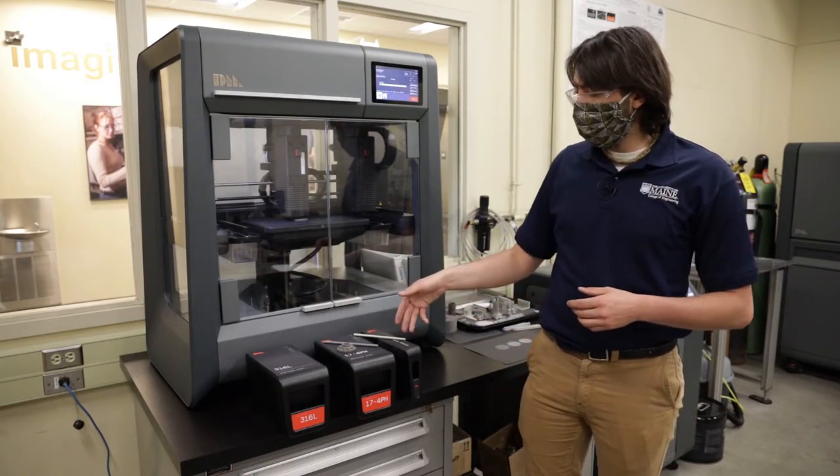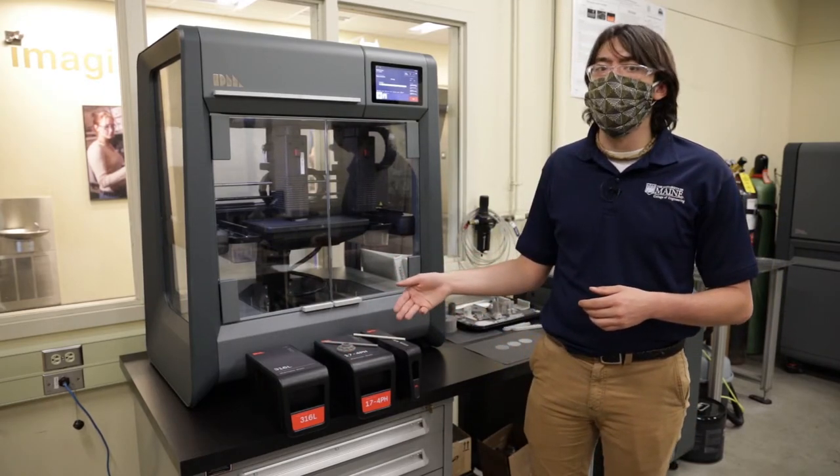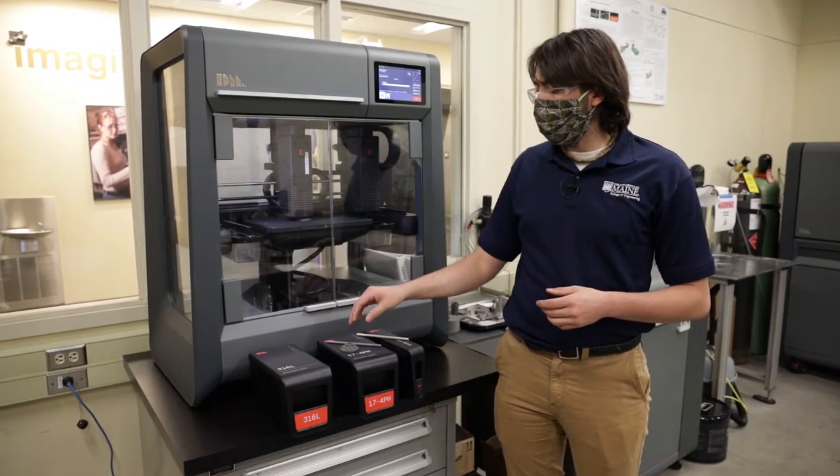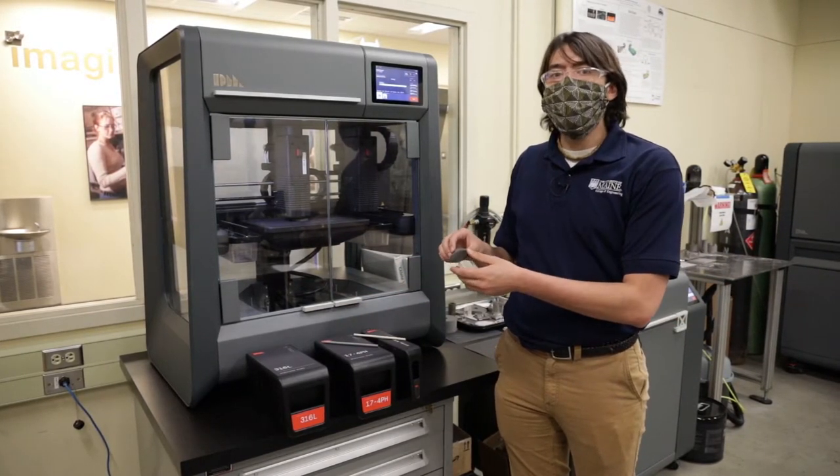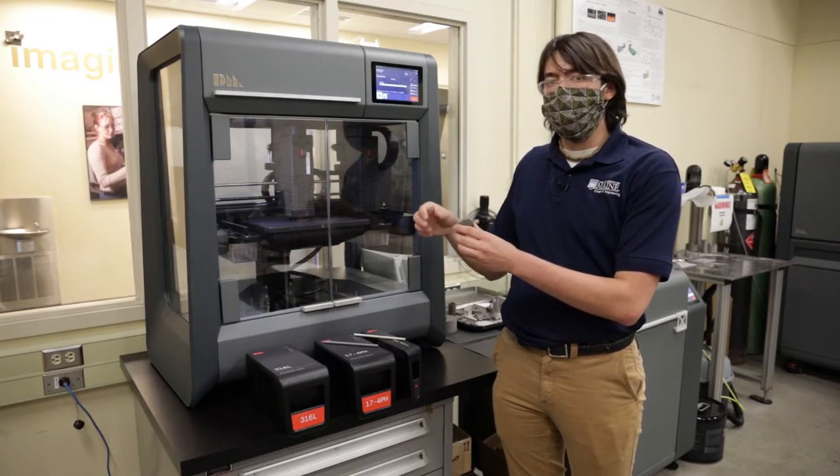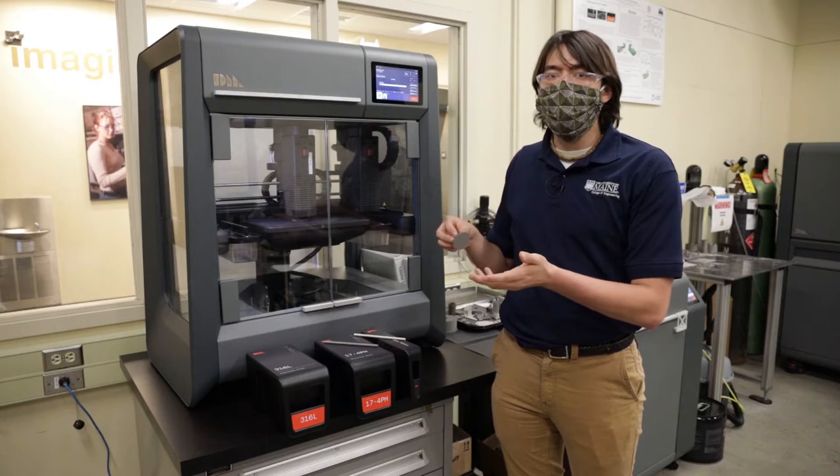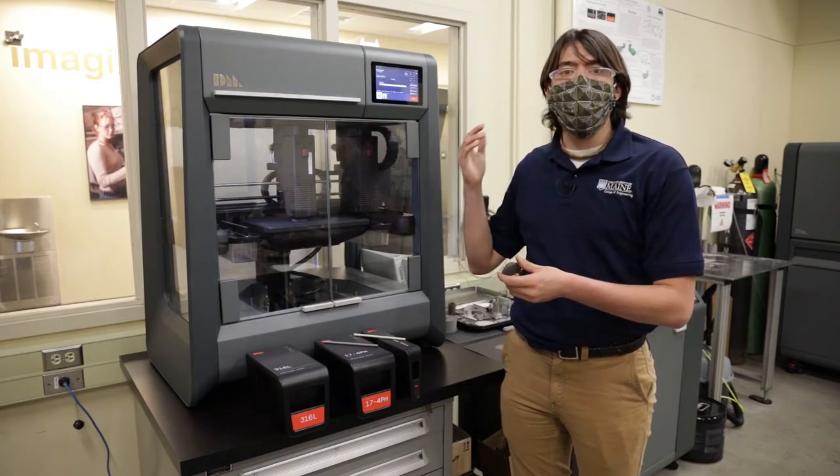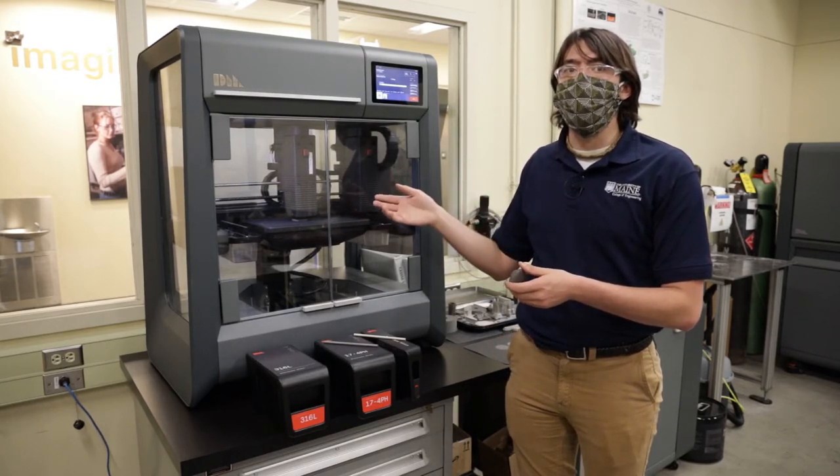And then this third cartridge contains interface media, which is used to create a non-stick layer between the bottom part that gets printed and then the part itself. And that is needed to make the rest of the processes that come after printing possible.